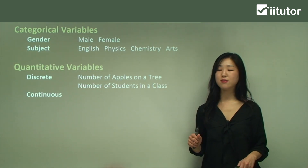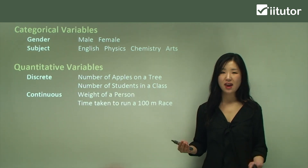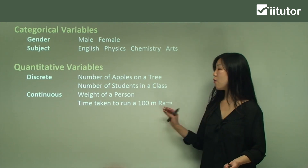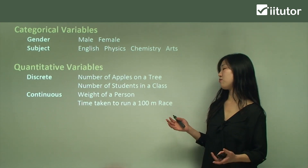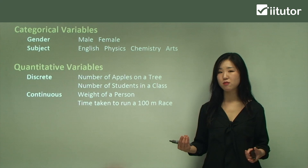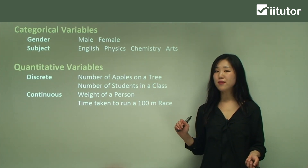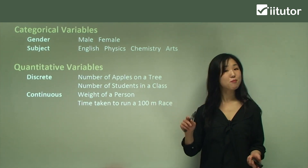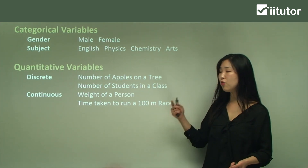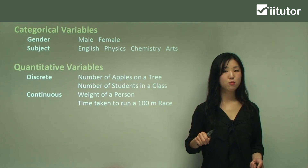The second subcategory is continuous. For example, the weight of a person — we can't count weight — or the time taken to run a 100 meter race. We can't count time either; it's a measurement. So those kinds of variables we call continuous.